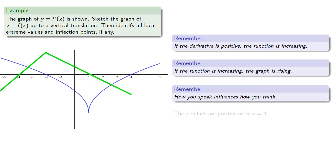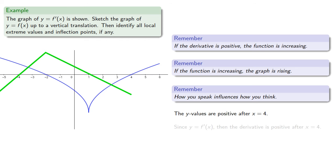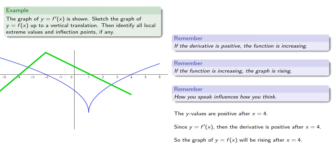The y values are positive after x equals 4. Since y equals f prime of x, the derivative is positive after x equals 4. And since the derivative is positive, the function is increasing, and so the graph is rising after x equals 4.